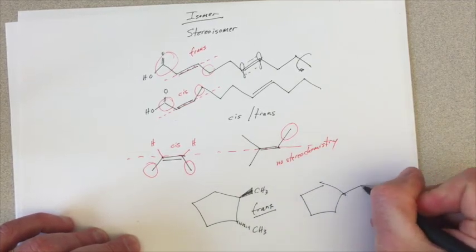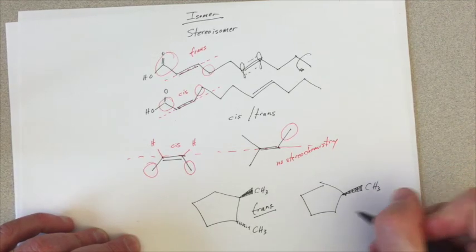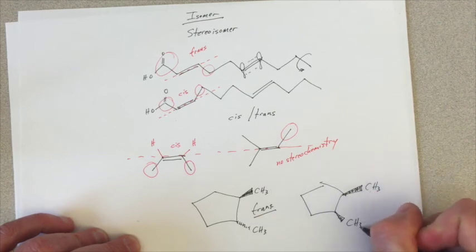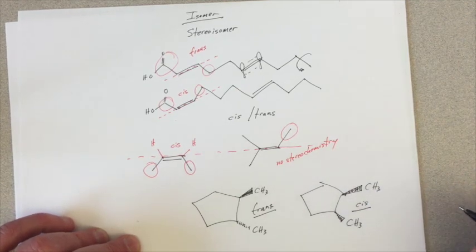We might imagine a cis version of this dimethylcyclopentane where both methyl groups are pointing up or pointing down. That would be the same molecule and would be called cis.